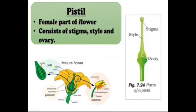The pistil is the female part of the flower. It consists of style, stigma, and ovary. This is the female reproductive part of the flower.